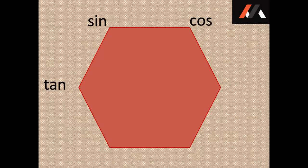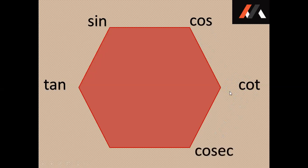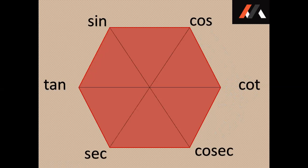The full form of tan is tangent. We place cotangent opposite to tangent. The abbreviation of cotangent is cot. Therefore, we place cot opposite to tan. Since all the c's are towards the right side of the hexagon, we place cosec after cot. Sec is the only function left. Now, we have to attach the opposite vertices of the hexagon, and we have to write number 1 in the middle of the hexagon.